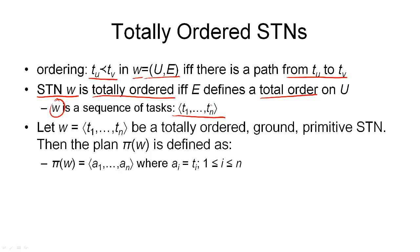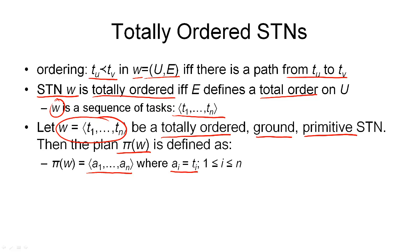This gives us a third property a task network might have: it can be totally ordered, ground, and primitive. If we are given such a network described by the sequence t1 through tn, then we can define the plan that accomplishes this task network by the function π(W). It is simply defined as the sequence of actions a1 through an — the same length as the sequence — where each ai is the same as the ti. In other words, each action accomplishes the task that is at the same position in the sequence of tasks in the task network.